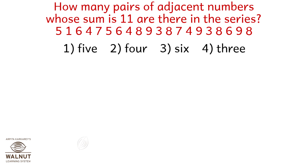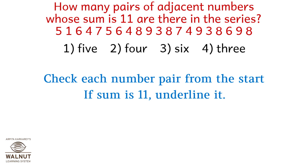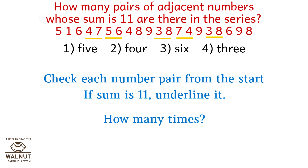How many pairs of adjacent numbers whose sum is 11 are there in the series given below? Checking each pair: 7+4=11, 5+6=11, 3+8=11, 7+4=11 again, and 3+8=11. That is five occurrences. So option one, five, is the correct answer.